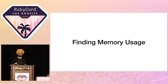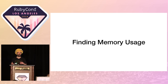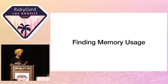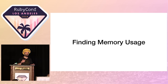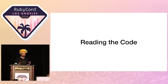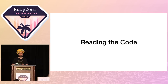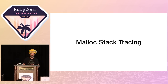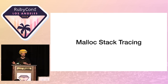Before we can talk about reducing memory usage, we have to be able to find what memory to reduce. The first thing I want to talk about is actually finding memory usage in your application. Ruby is written in C — MRI is written in C — so a lot of the heap analysis has to be with the C programming language. There are two main techniques I use: the first is a very bad technique called reading the code, which is inefficient. The other technique I like is called malloc stack tracing.